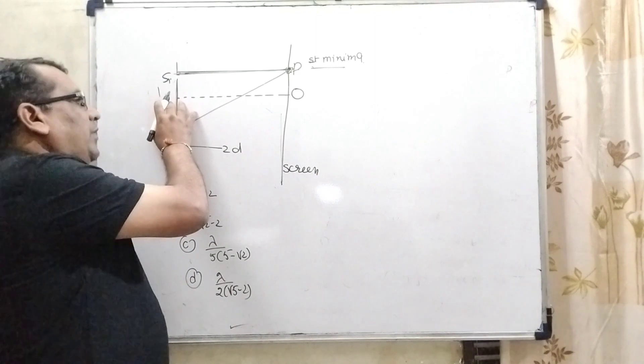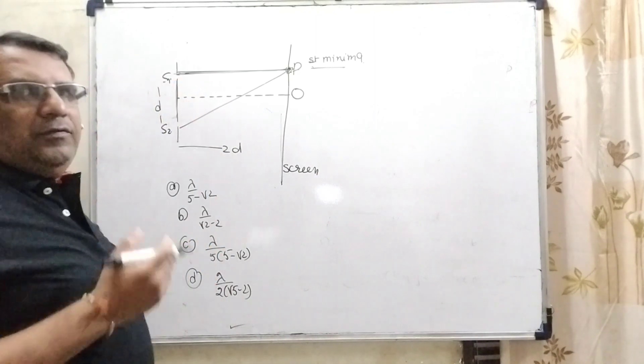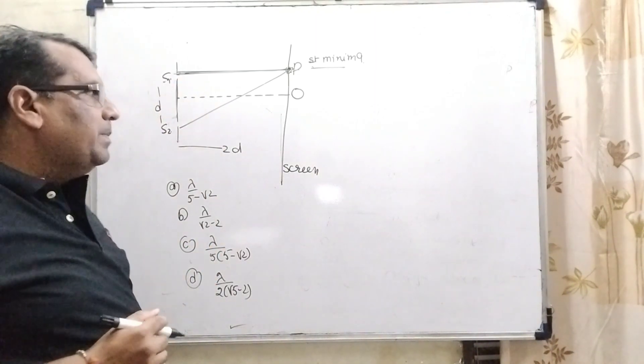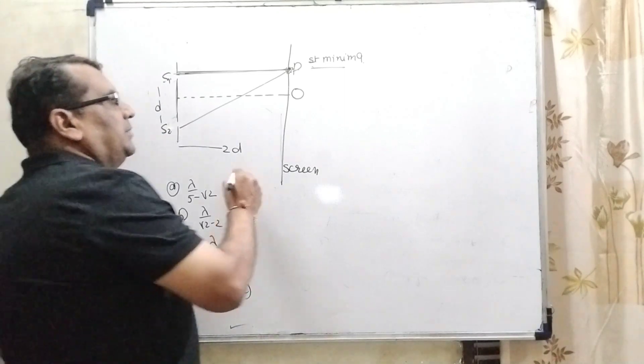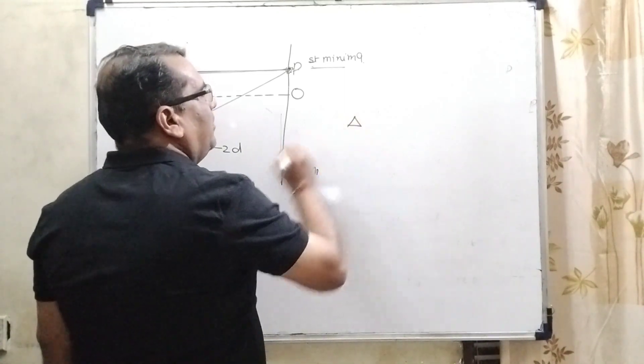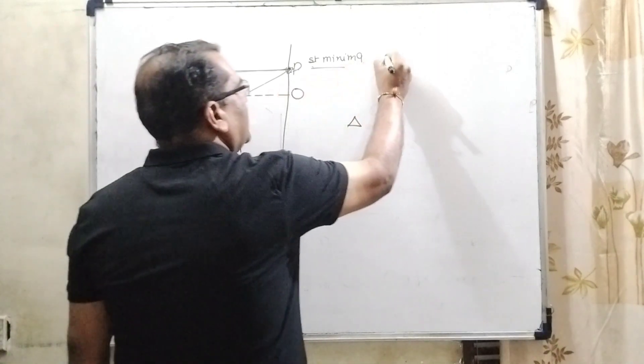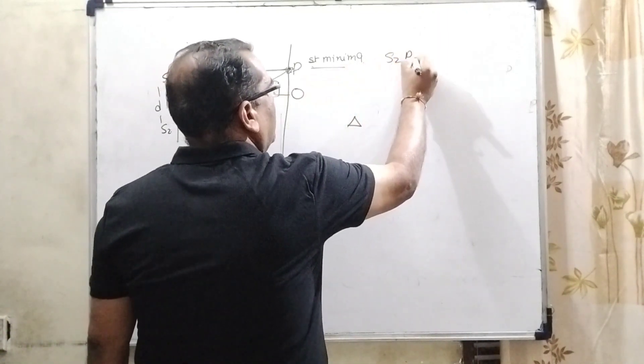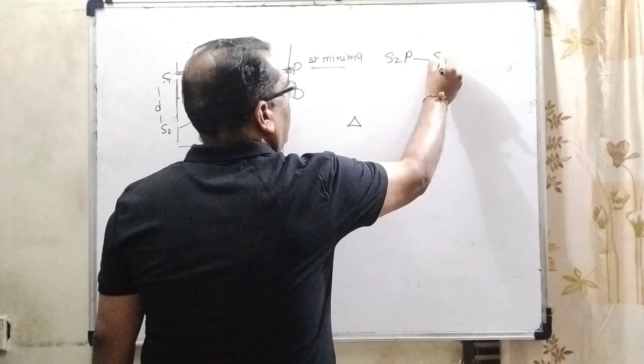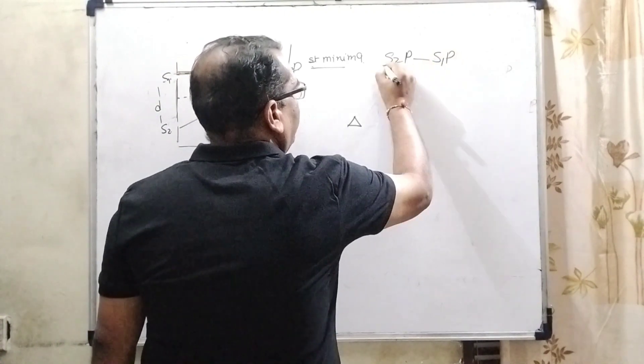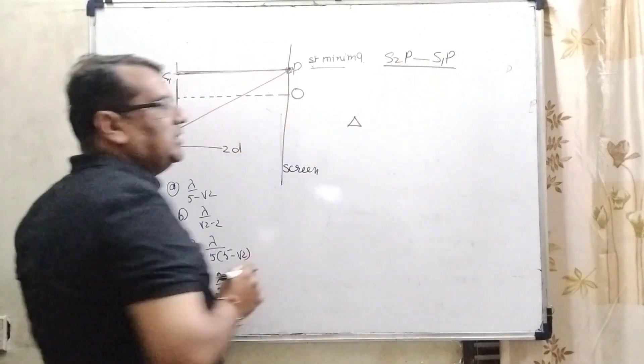We have to find out the separation d in the form of wavelength. As we know, path difference is denoted by delta. What is path difference? That is S2p minus S1p. Here we are using this formula.